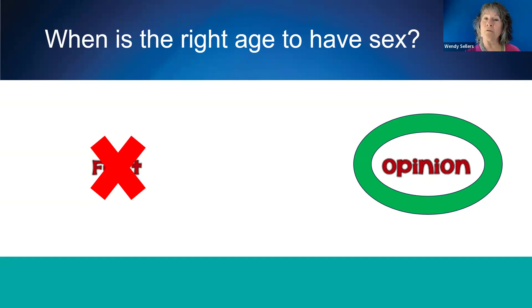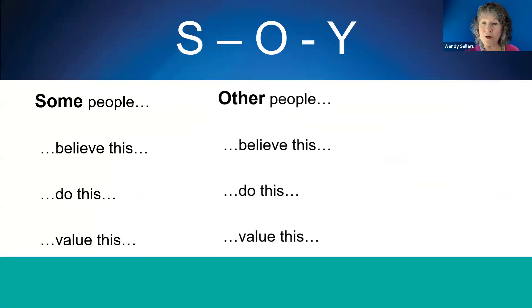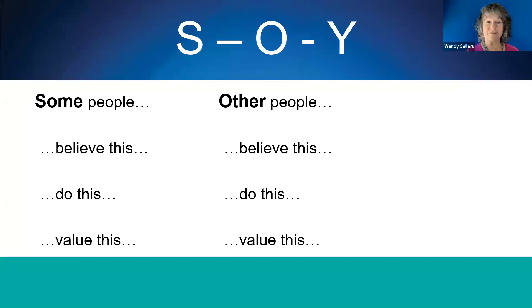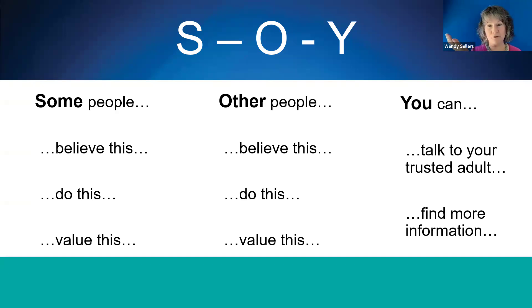Let's look at a formula for answering opinion questions. It's called the SOI formula, and it goes like this: some people believe this, do this, value this. Other people believe this, do this, or value this. You can figure out by talking to your trusted adult and getting more information to help you form your own opinion, value, or belief about that. So the SOI formula is: some people do this, other people do that, you can find out more.